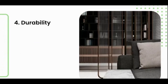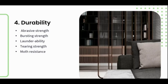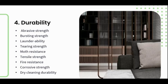The next textile property is durability — a really important element to consider. Durability characteristics relate to how the fabric functions under a lot of wear and use. Key characteristics to look out for include: abrasive strength (measure of rubbing action), bursting strength (measure of vertical pressure), launderability (how is the fabric able to be cleaned — can it withstand excessive laundering?), tearing strength, moth resistance, tensile strength, fire-resistant strength, corrosive strength, and dry cleaning durability.